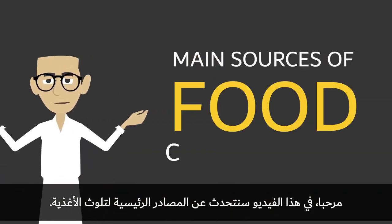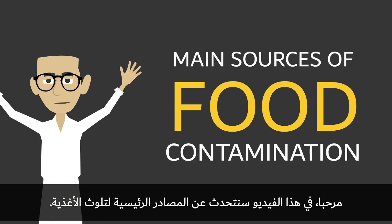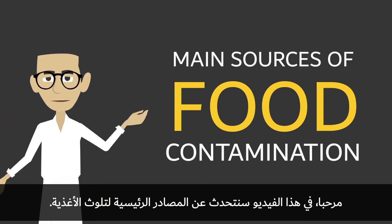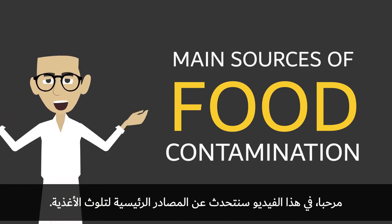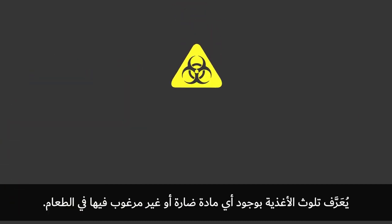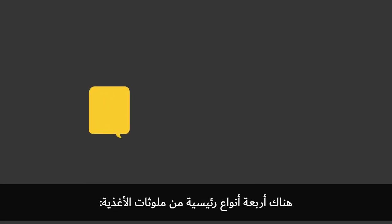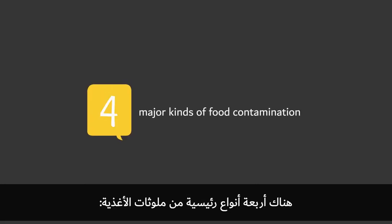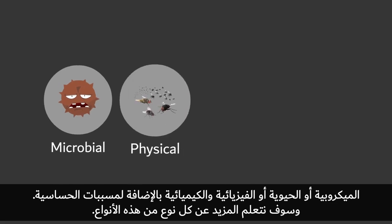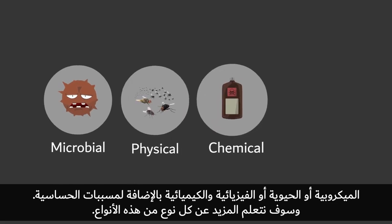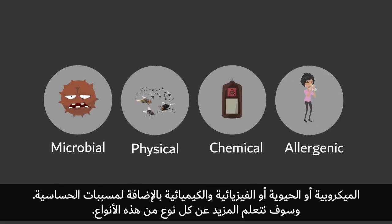Hi! In this video, we are going to discuss the main sources of food contamination. Food contamination is the presence of any harmful or objectionable substance or material in food. There are four major kinds of food contamination – microbial, physical, chemical, and allergenic. We will explore each kind here.